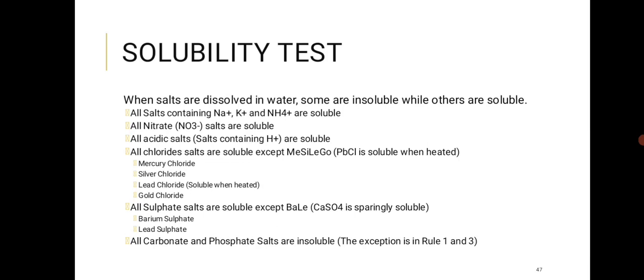All chloride salts are soluble except the 'MISS' group: mercury(I) chloride, silver chloride, and lead chloride. However, lead chloride is soluble when hot, because solubility of solids increases with increasing temperature while for gases it decreases. Silver chloride and lead chloride — don't forget those exceptions for chlorides.